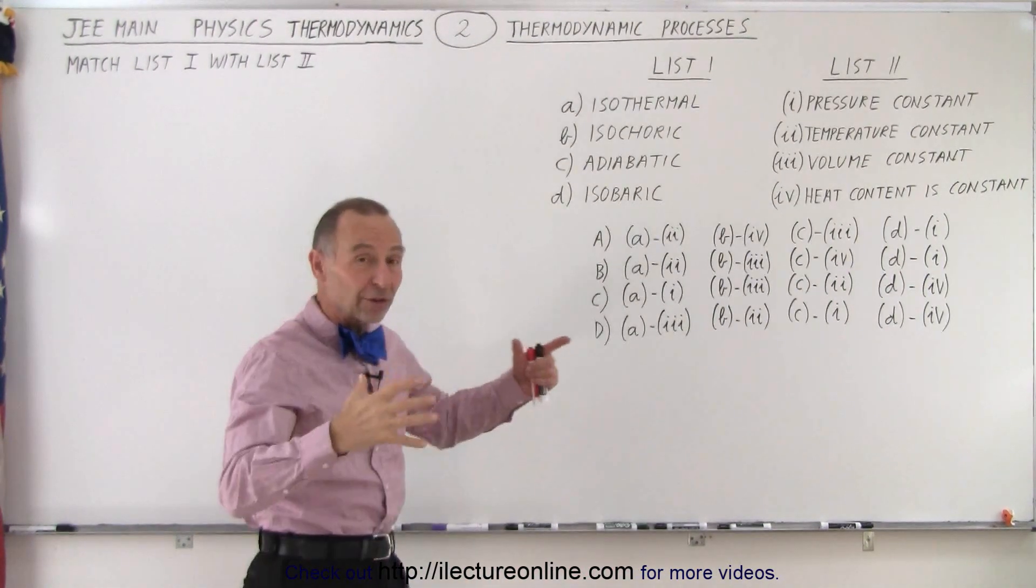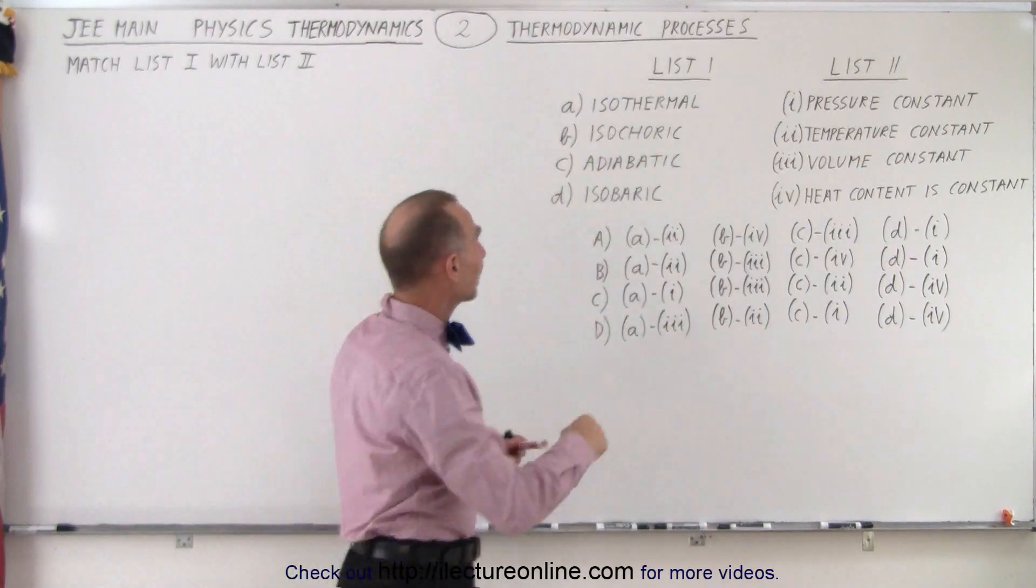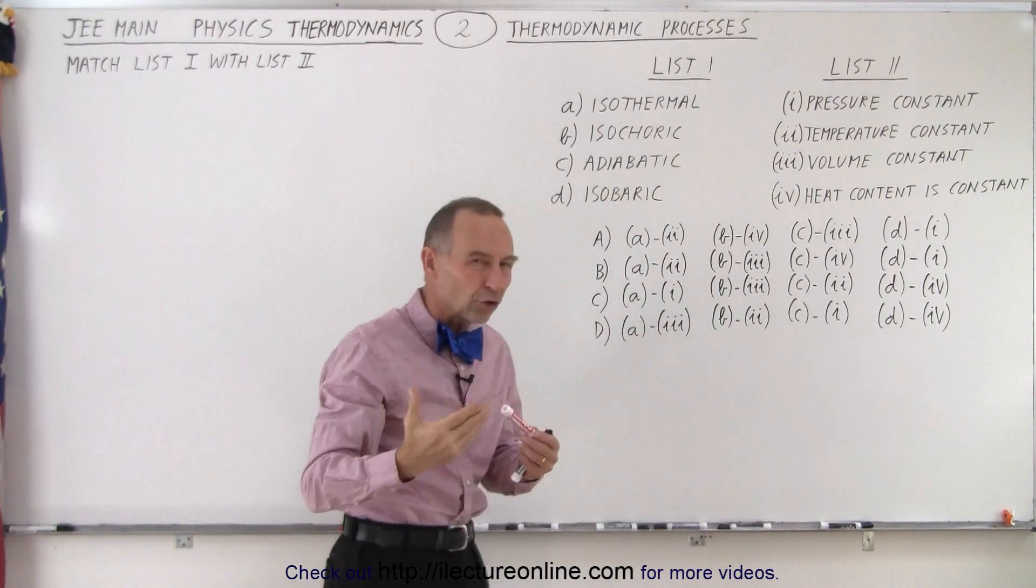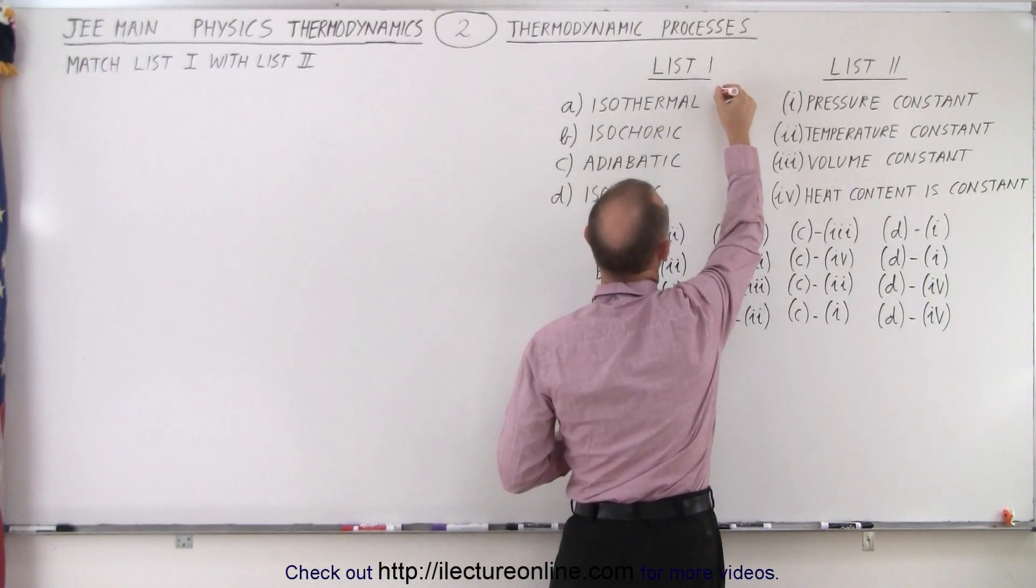It's very easy to get confused with all the symbolism. So to make sense out of things, I like to mark each of these with the state variable that's associated with that remains constant. For example, isothermal, the temperature remains constant.